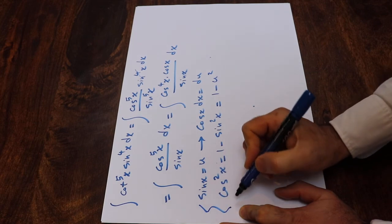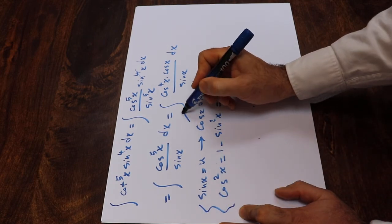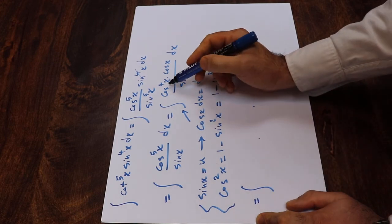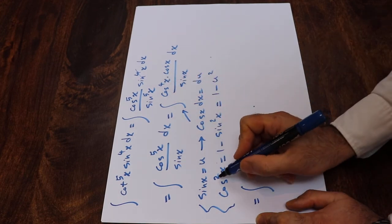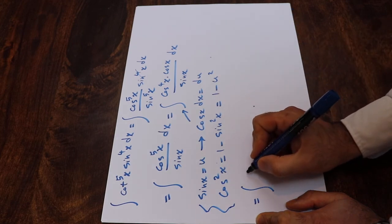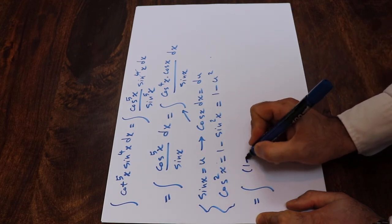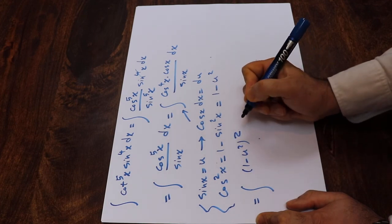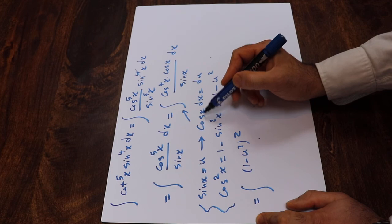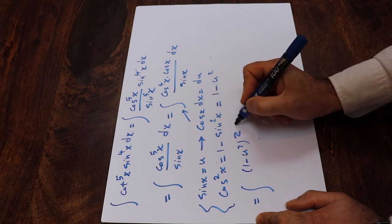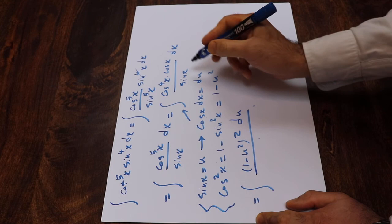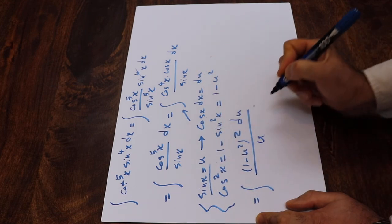If you substitute this expression into the integral, you can rewrite it as follows: instead of cosine 4x, since cosine²x equals 1 minus u², cosine 4x will be equal to (1 minus u²) to the power of 2. Instead of cosine x dx, I write du, and instead of sin x, by definition sin x is u, so I put u in the denominator.